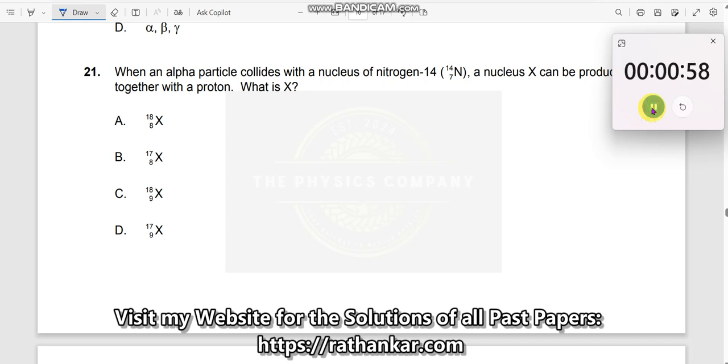Question number 21. When an alpha particle collides with a nucleus of nitrogen-14, a nucleus X can be produced.